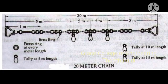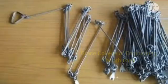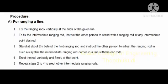For every 1 meter interval, a brass ring is provided. And for every 5 meter length, tallies are provided. Tallies with 1 leaf are provided at every 5 meter length, tallies with 2 leaves at every 10 meter length, and for 15 meter length, tallies with 3 leaves are provided.